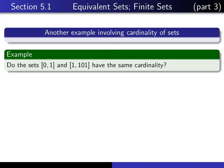So in this example we ask the question: do the sets [0,1], in other words the set of real numbers between 0 and 1, and the set of real numbers from 1 to 101 have the same cardinality?